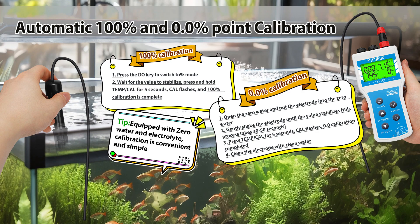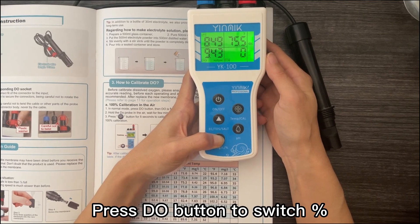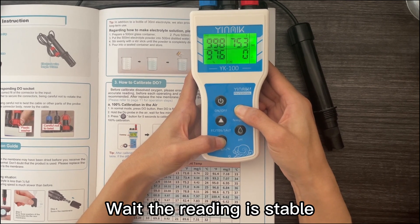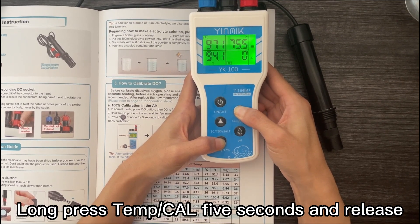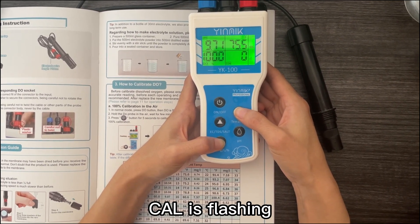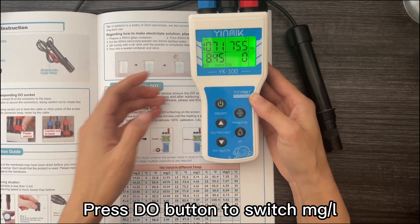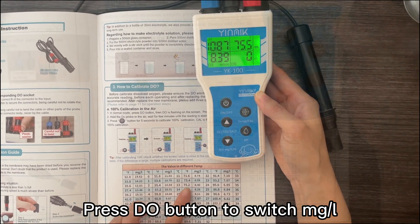Begin to calibrate. Press DO button to switch to percent. Wait until the reading is stable. Long press Temp/CAL five seconds and release. Cal is flashing. 100% flashes two times and calibration is done. Press DO button to switch to milligrams per liter.